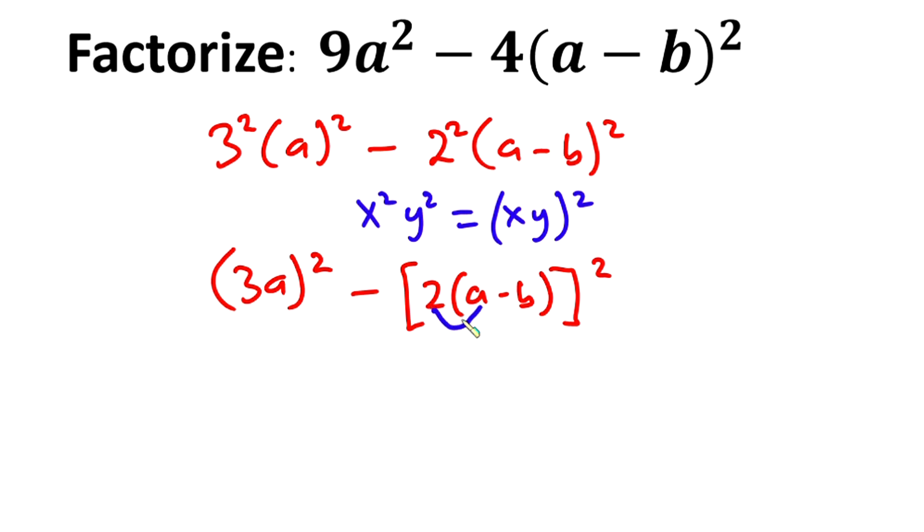From here, we're going to distribute the 2, so we have (3a)² minus (2a - 2b)².